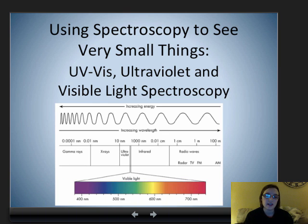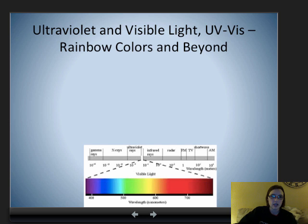Hi guys, welcome to the next video in our series of spectroscopy. This video is going to be all about UV-Vis, which is ultraviolet and visible light spectroscopy. Ultraviolet and visible light is just using the ultraviolet and the rainbow portion of the electromagnetic spectrum.